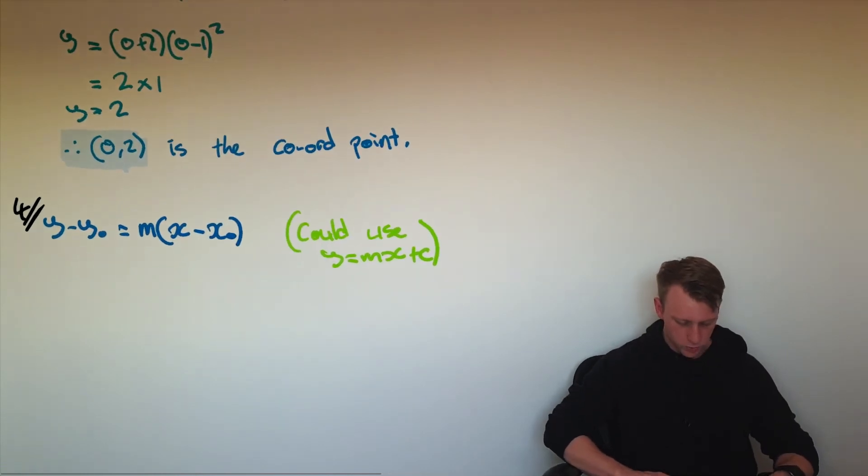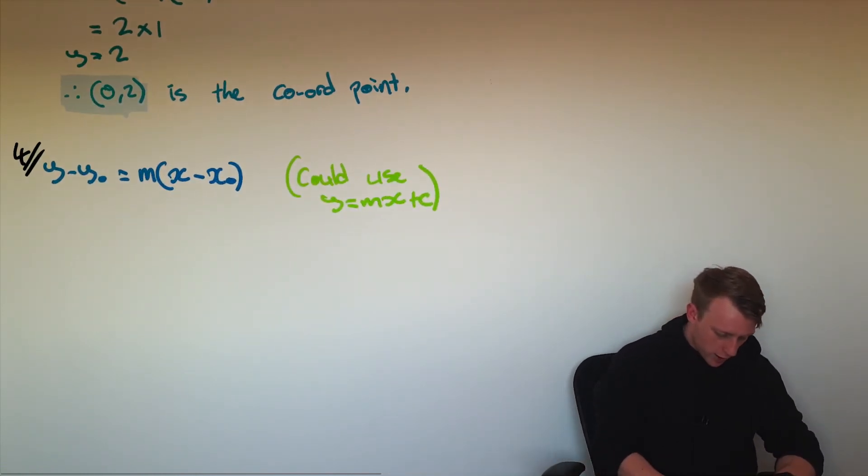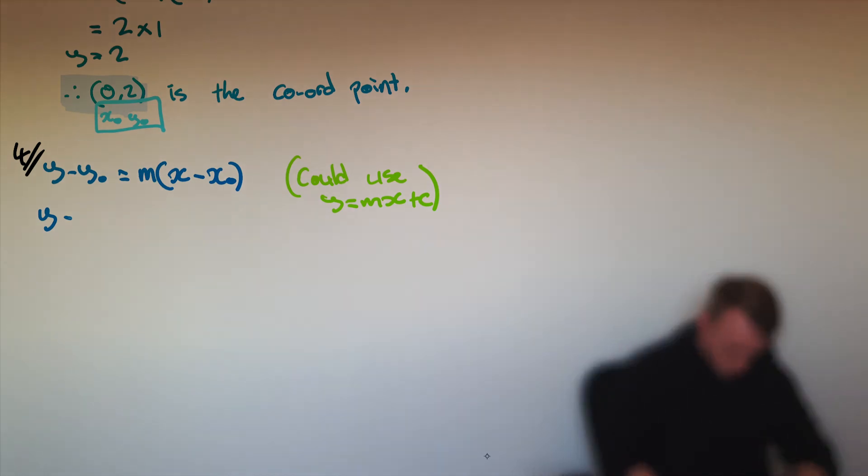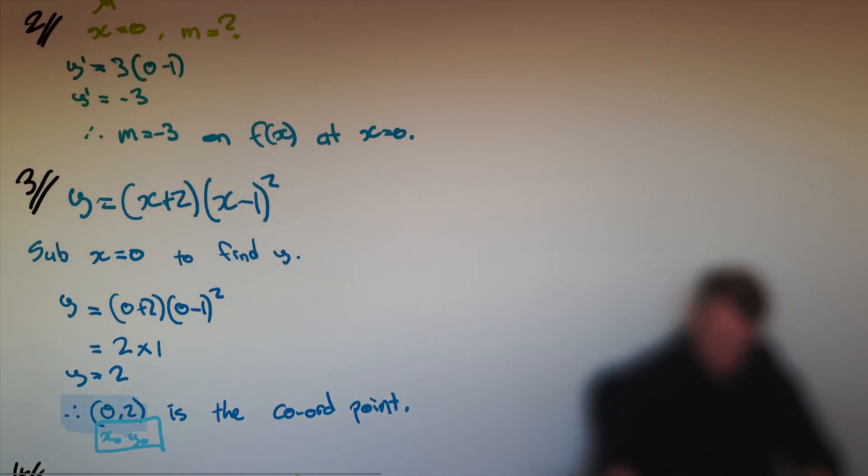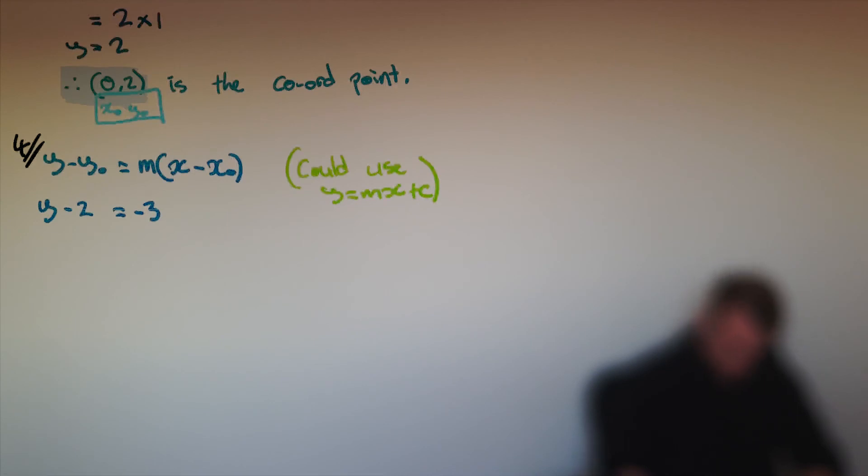In fact, I might actually do it in green over to the side. So we've got y minus y naught, which is, well, this is x naught. That's y naught there. So that's minus 2 outside of m, which we saw was negative 3. That's what we found in this step here. x minus x naught, which is 0. And then I can simplify this out.